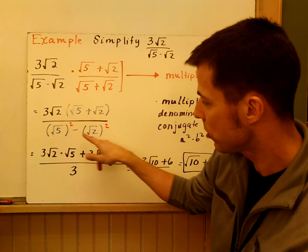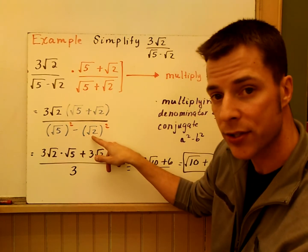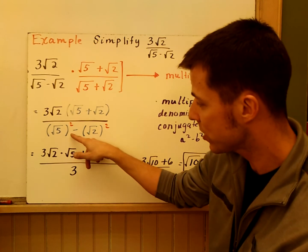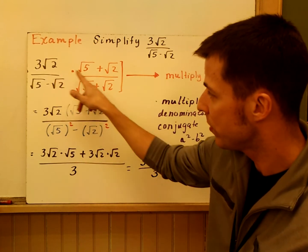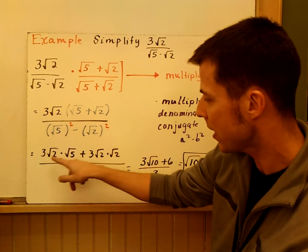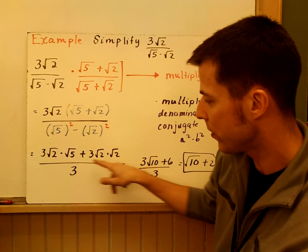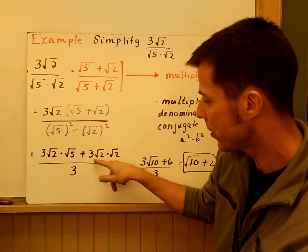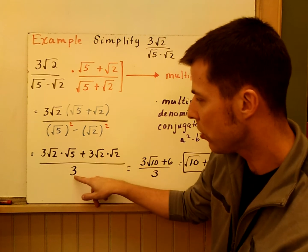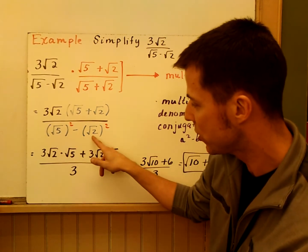So I distribute the 3 root 2 here across. We multiply straight across. Remember, conjugates square the first term and the second term and just square them both and have that subtraction between them. I distribute the 3 root 2 through. And that's what you see here. 3 root 2 times root 5 plus 3 root 2 times root 2 all over 3 because 5 minus 2 is 3.